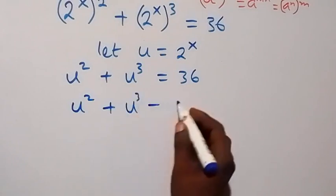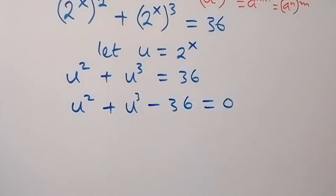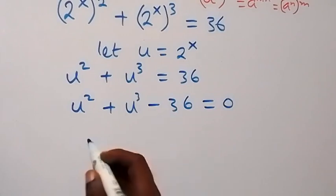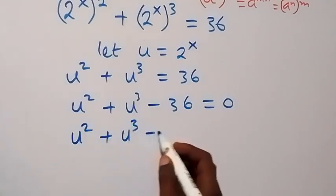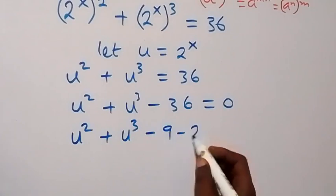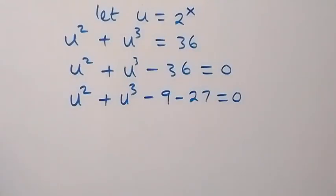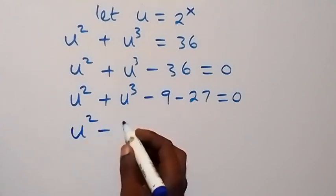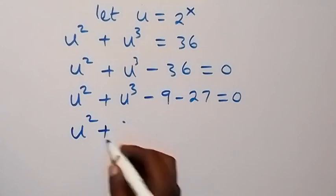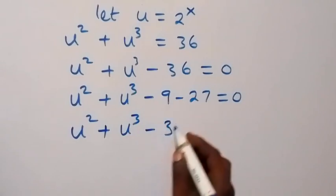In the next step, we take 36 to the other side and have u squared plus u cubed minus 36 equals 0. From here we can write minus 36 as minus 9 minus 27, and this becomes u squared plus u cubed minus 9 minus 27 equals 0.